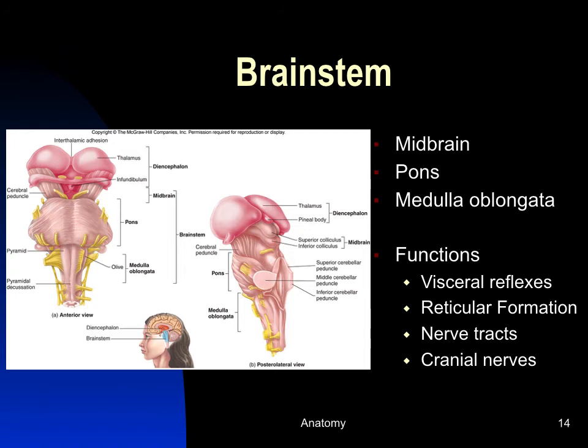The midbrain has two sets of bumps — the superior colliculi and inferior colliculi — which are centers for visual and auditory reflexes. The pons controls some respiratory functions and serves as a large relay for sensory and motor information. It connects to the cerebellum for motor functions, and to the medulla, which is an important visceral reflex center controlling heart rate and blood flow.